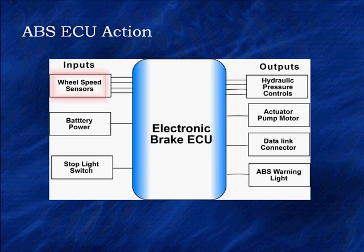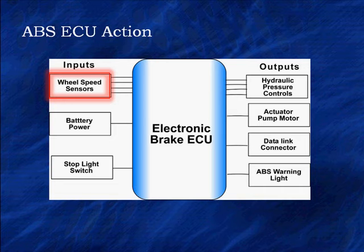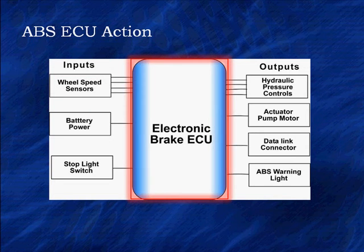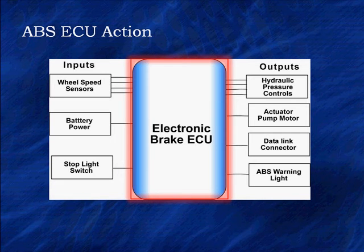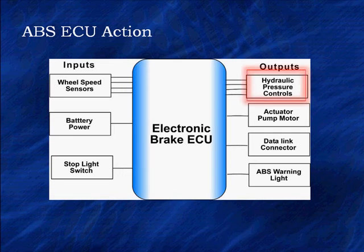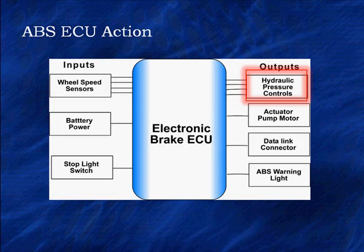Let's review how we got here. The wheel speed sensors reported one or more wheels going slower than the average vehicle speed. The ECU took a calculation and determined that the range of slip fell within ABS control range. Now we're into applying hydraulic or pneumatic controls, depending on the application, to modify the pressure on the brakes to increase the wheel speed and correct for the under-speed condition.